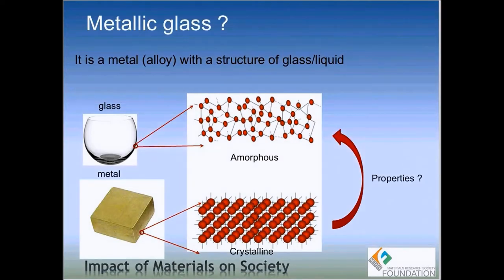Metallic glass is essentially a metallic alloy which has more than one metal and it has a structure like a glass. Most solids can be classified into two different types depending on their atomic arrangement: either they are crystalline solids or they are amorphous solids. Glasses fall under the category of amorphous solids, but most of the metals we know are actually crystalline.